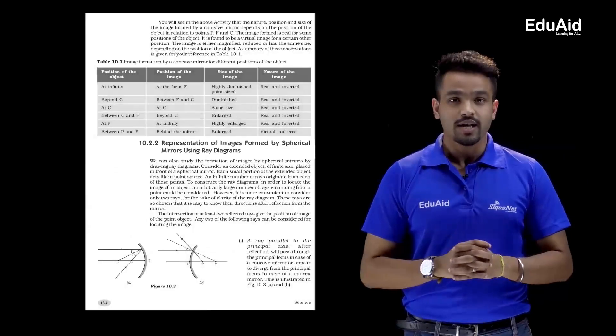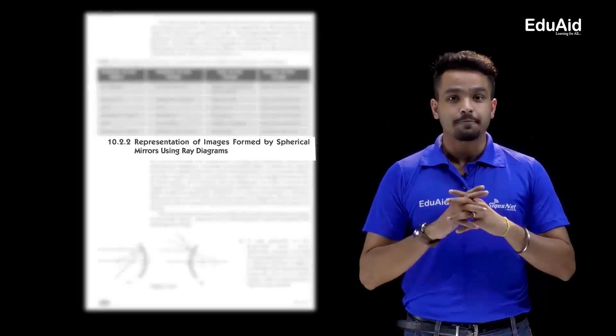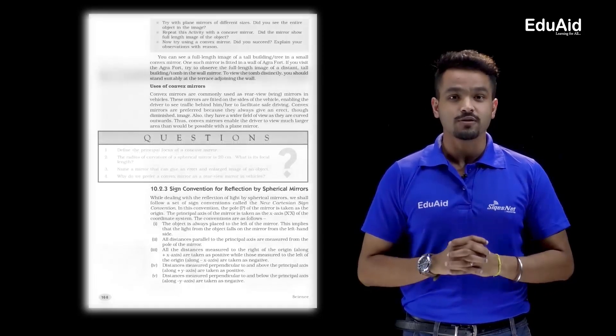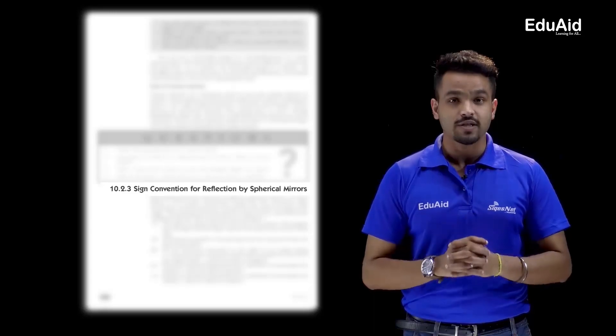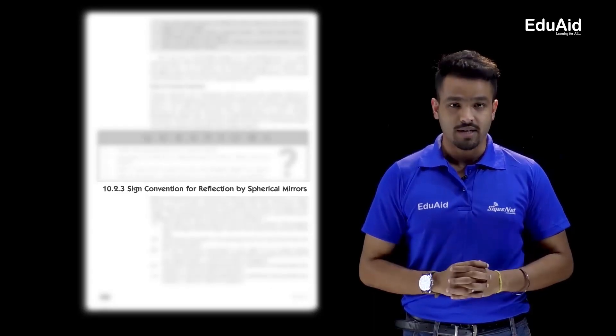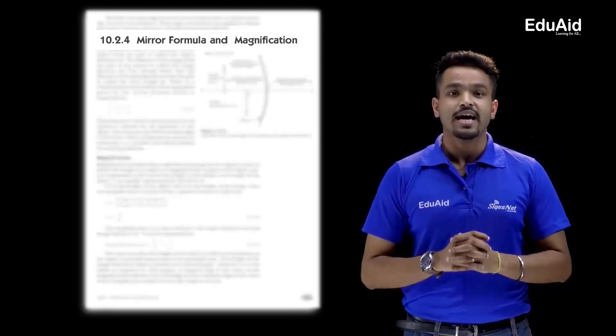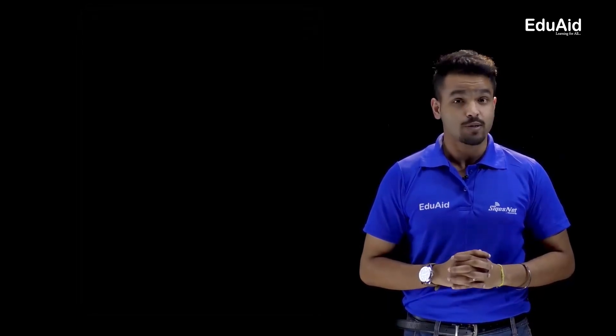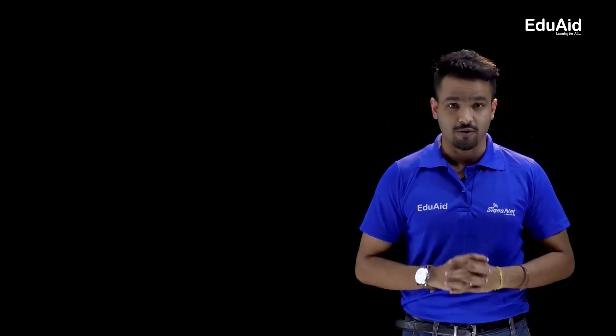Topic 10.2.2 is about representation of image formation by spherical mirrors using ray diagrams. Topic 10.2.3 will be about the sign convention for mirrors, and 10.2.4 will cover the mirror formula and magnification. We'll summarize this with a few questions and examples, which I think will be very beneficial for you.